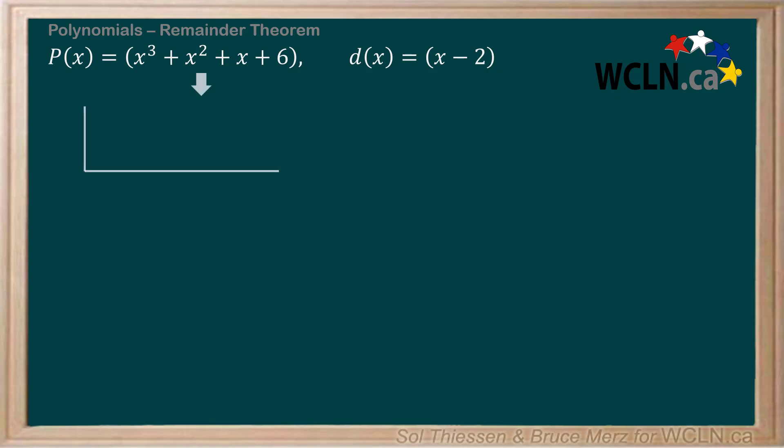I'm going to use synthetic division to make the process a little faster, but note that you could use long division if you prefer, and the steps for that are laid out in the graphic on the lesson page for this section. The divisor is already in the x minus a form, with the a value being 2, so we'll write a 2 beside the half box symbol.